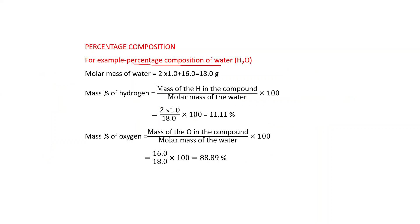Let's find the percentage composition of water. First, we will find the molar mass of water. That is 2 atoms of hydrogen multiplied by 1.0 (atomic mass of hydrogen) plus 16 (atomic mass of oxygen), which gives 18 grams. This is the molar mass of water. Now we can find the mass percent of each element using this molar mass.